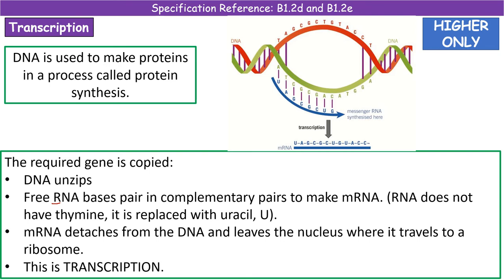Once we get to the end, that strand of mRNA is released and leaves the nucleus, where it travels to a structure in the cytoplasm called a ribosome. So the process of making the mRNA is transcription. If you get asked about what happens here: DNA unzips — usually worth a mark on its own — the free RNA bases make their complementary pairs to make the strand of mRNA, which leaves the nucleus.